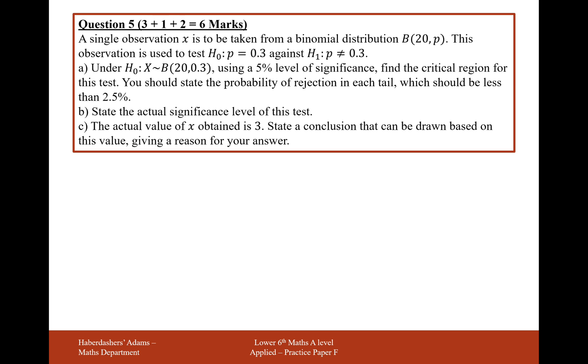I don't think the probability is actually 0.3, or maybe it's too high. Say if you get 15 heads out of that 20, your probability is not likely to be 0.3. Under the null hypothesis where the binomial distribution of 20 and 0.3, using a 5% significance level, find the critical region for this test. You should state the probability of rejection in each tail. It should be less than 2.5%.